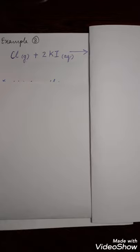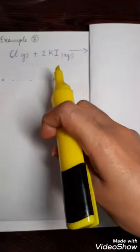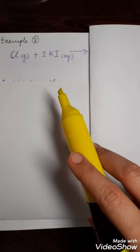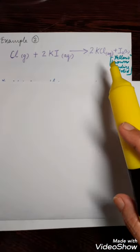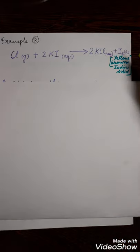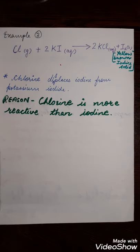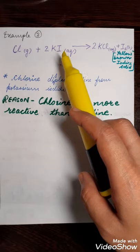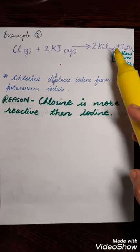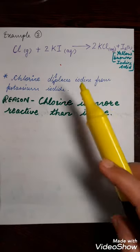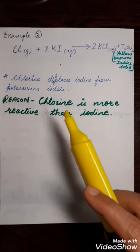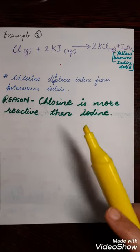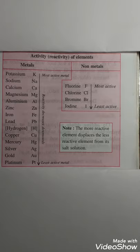Let us complete the third example. Chlorine gas is passed into the solution of potassium iodide. The colorless solution will turn yellow-brown. Can you name the products? When chlorine reacts with potassium iodide, we get a solution of potassium chloride and iodine as a residue, which gives yellow-brown color. The yellow-brown color is due to the iodine solid formed during the reaction. Chlorine displaces iodine from potassium iodide solution and forms potassium chloride and iodine. The reason: chlorine is more reactive than iodine. If we look at the activity series, chlorine is on top of iodine.